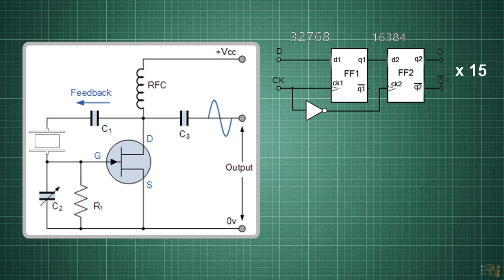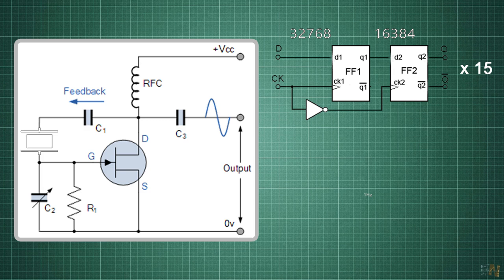But if we do this 15 times, we get a frequency of 1 Hz, which is 1 pulse per second. So now we could count seconds and if we sum up these pulses, we can count minutes, hours and so on.